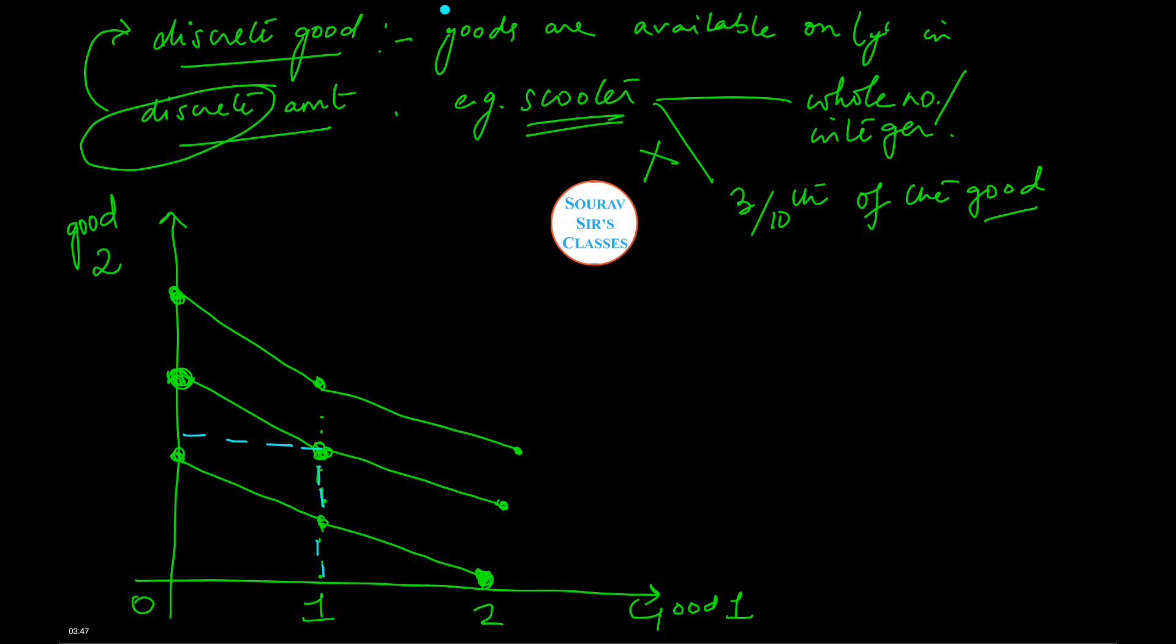So what we see here is that the dotted lines connect together all the bundles among which the consumer is indifferent. So all the dotted lines connect together the bundles among which consumer is indifferent.